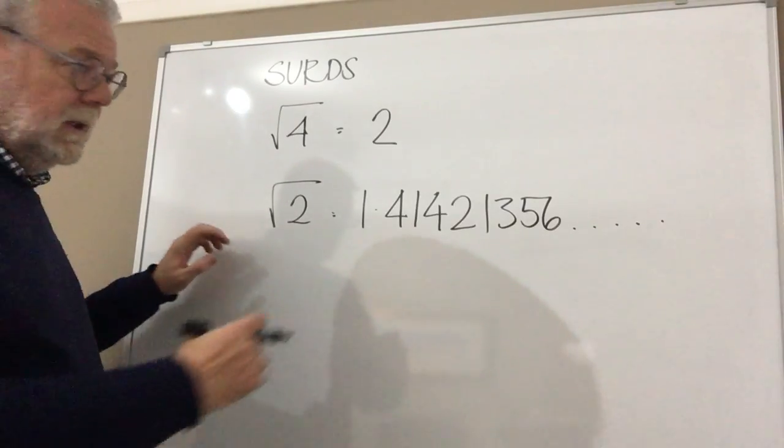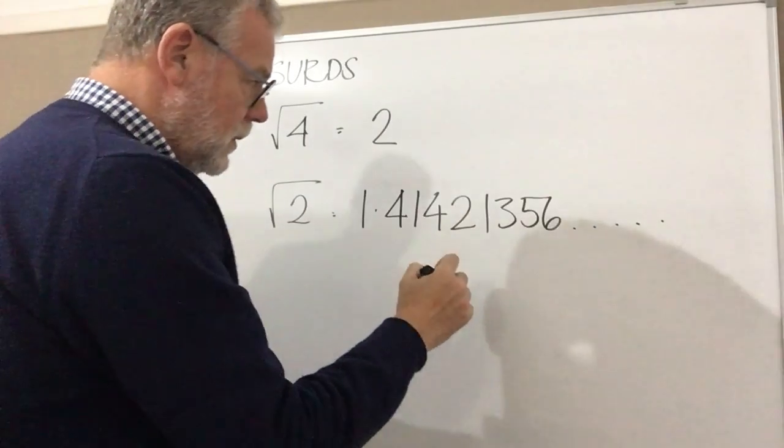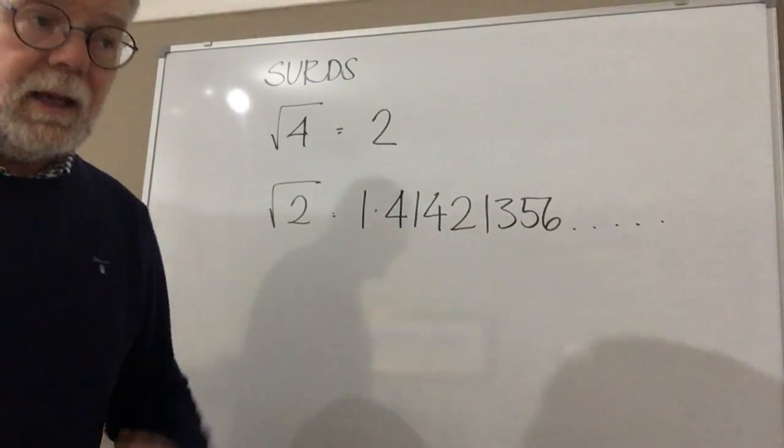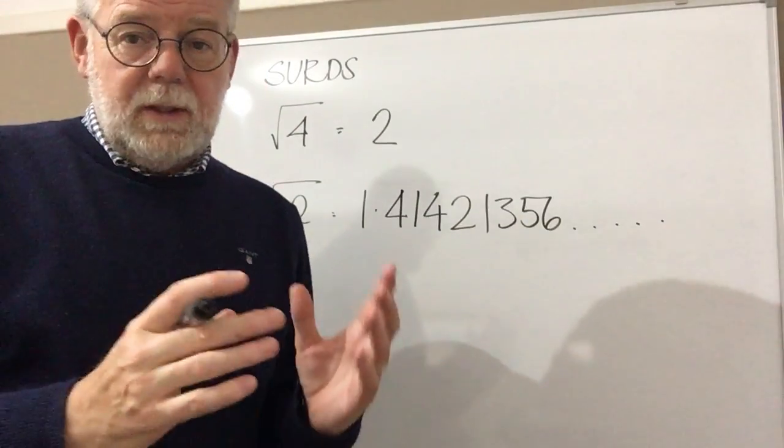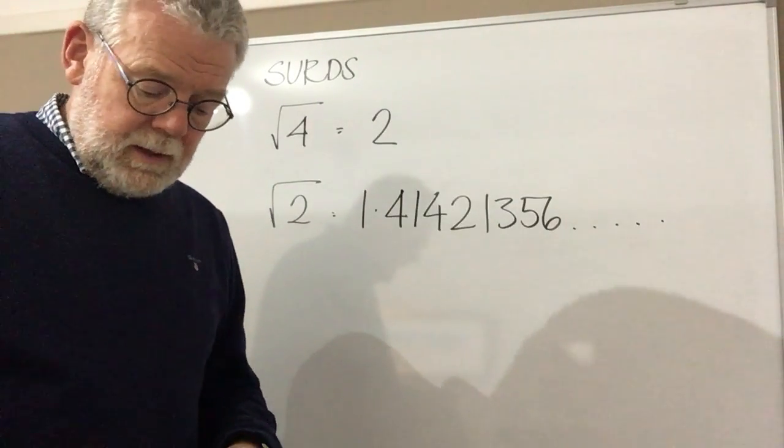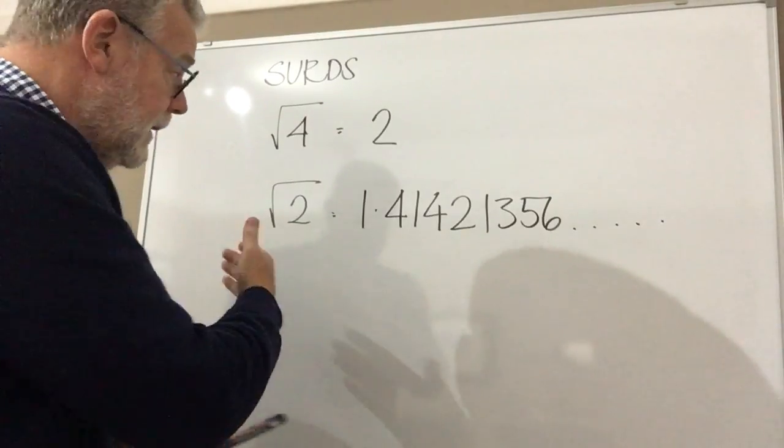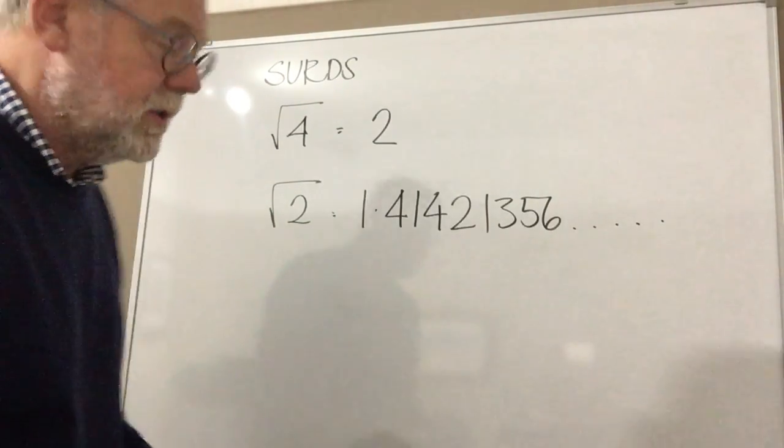And if I said what's the square root of 2 and you start to work that out on my calculator, I got 1.41421356 and then it keeps going and it keeps going to infinity. So it doesn't terminate as a decimal and it doesn't recur. And that's actually called an irrational number and that's all it is, that's what a surd is.